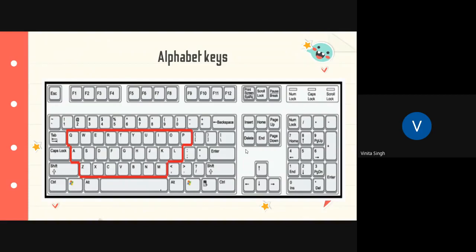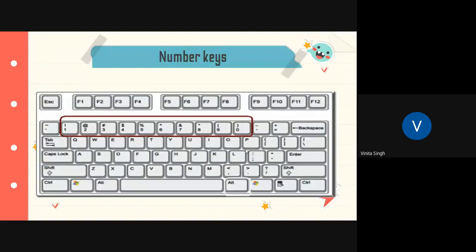Next, we have number keys. Keys on which you see the numbers 0 to 9 are called number keys. These are used to write numbers. One set of number keys is placed above the alphabet keys and the other set is on the right side of the keyboard. But this numeric keypad can only be used if the numlock key is on.